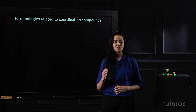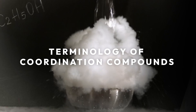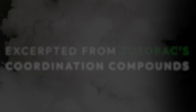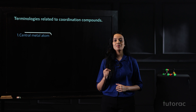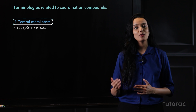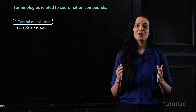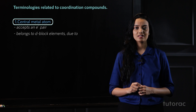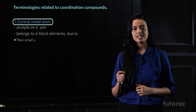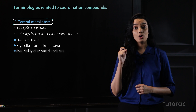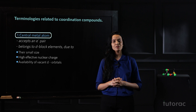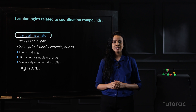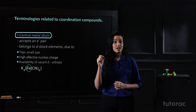Today in this video you will come to know about the terminologies related to coordination compounds. The first one is the central metal atom. It accepts an electron pair from an atom, ion, or molecule to form a coordinate bond. Usually the central metal atom belongs to d-block elements, due to their small size, high effective nuclear charge, and availability of vacant d-orbitals. In the example of K4[Fe(CN)6], the central metal atom is iron.